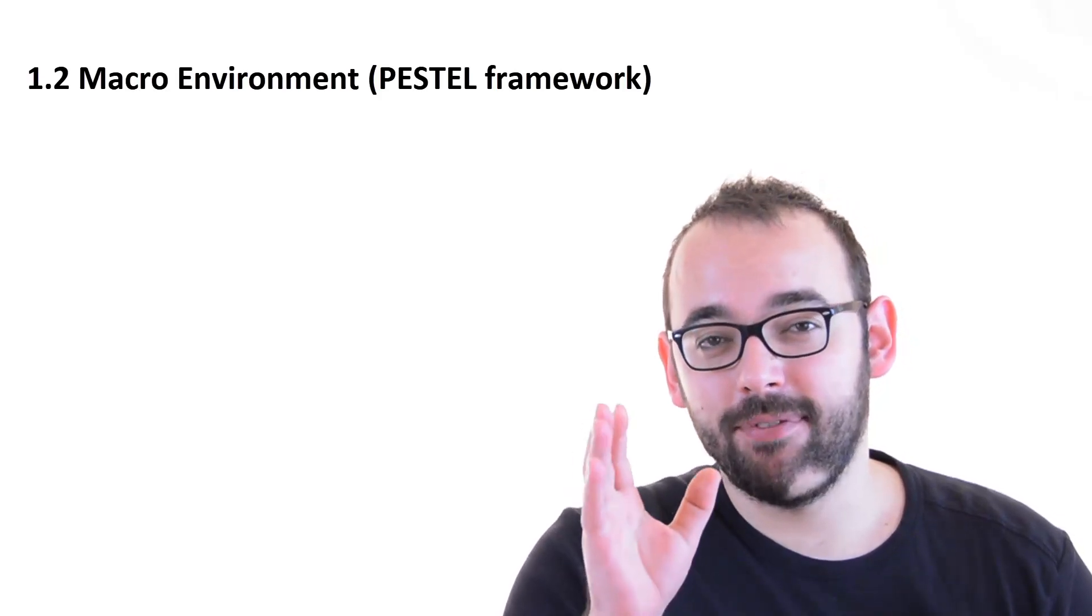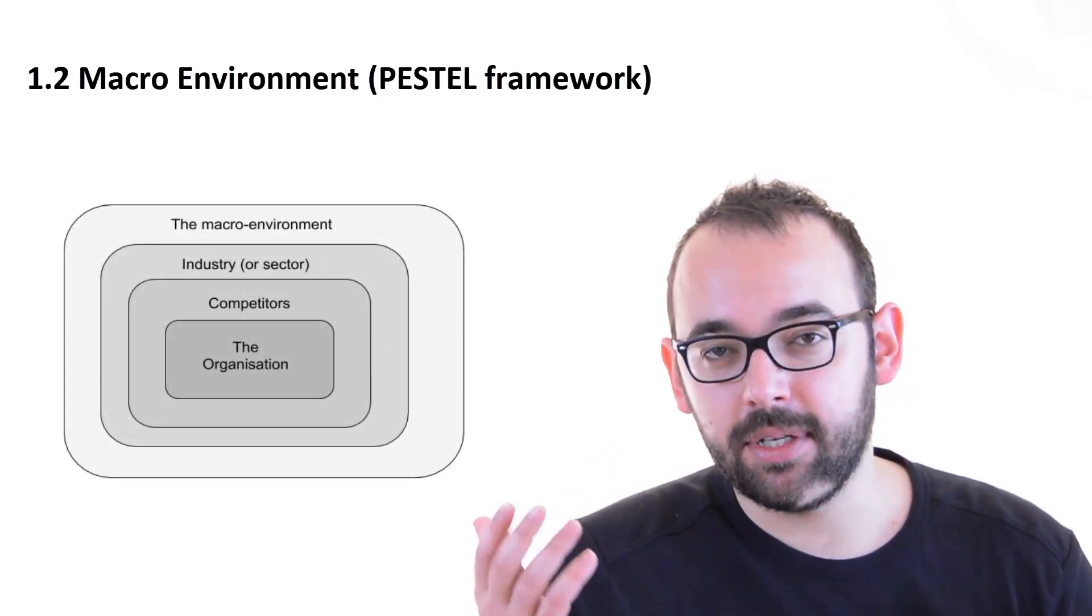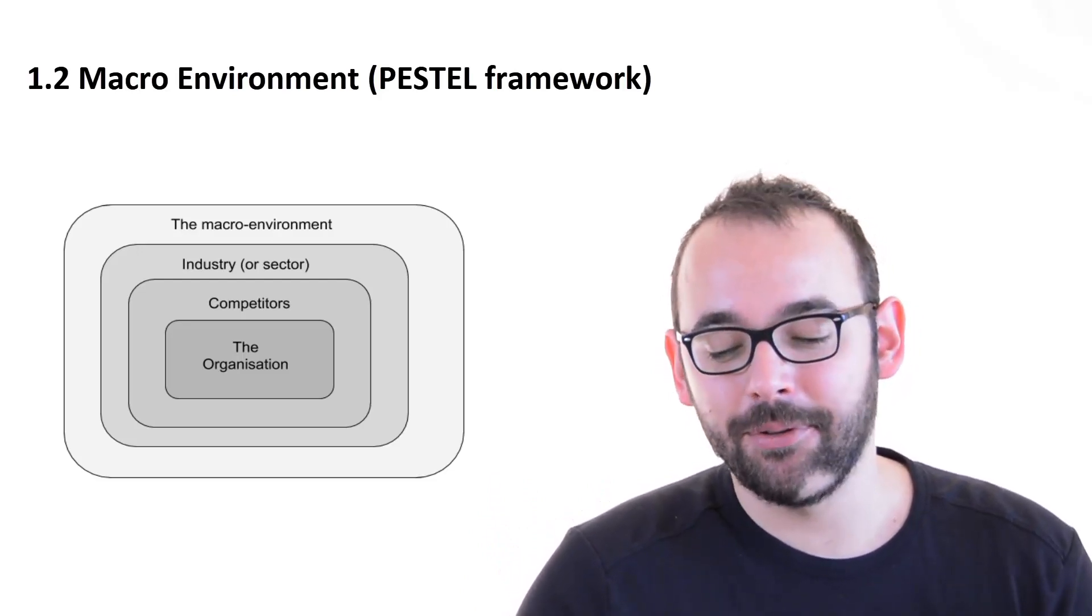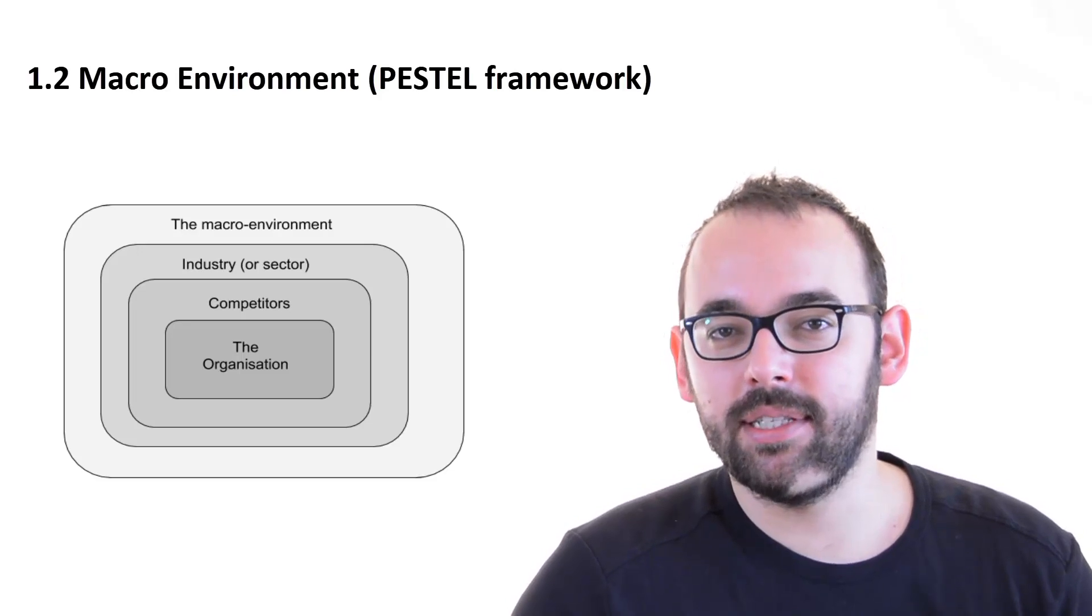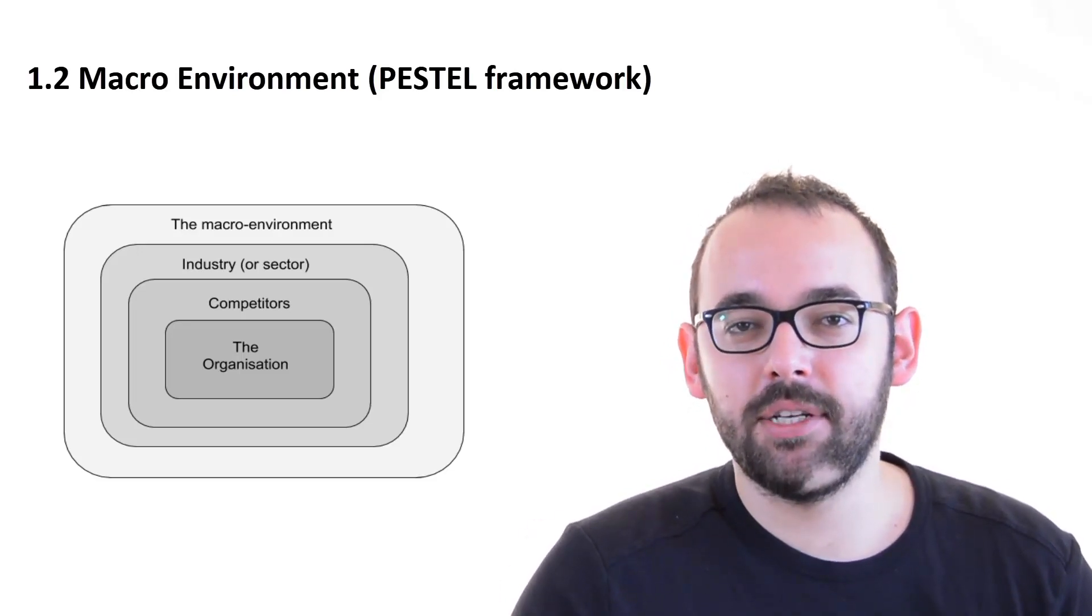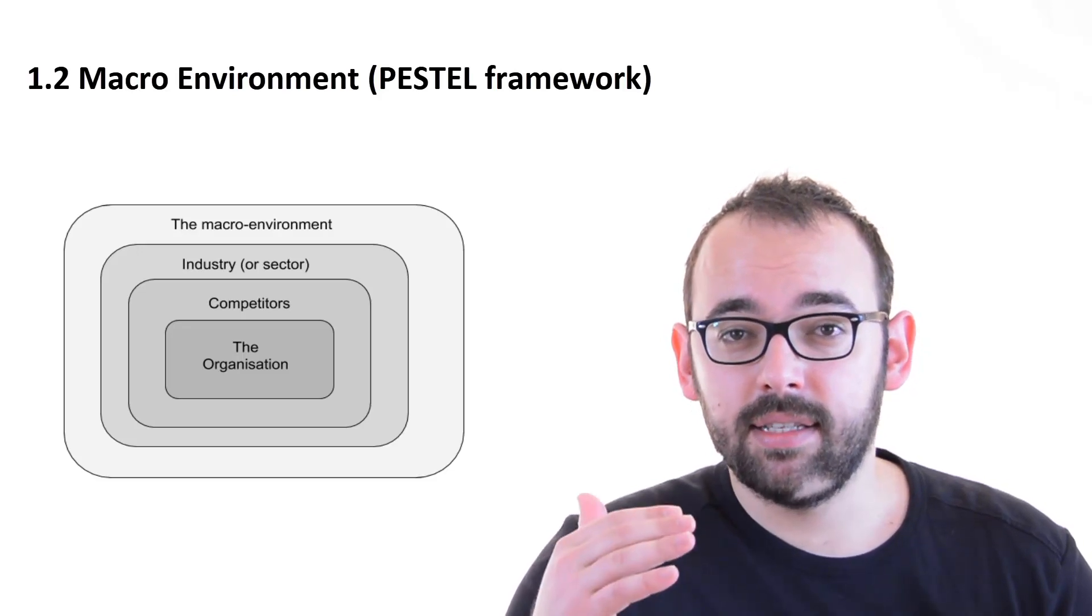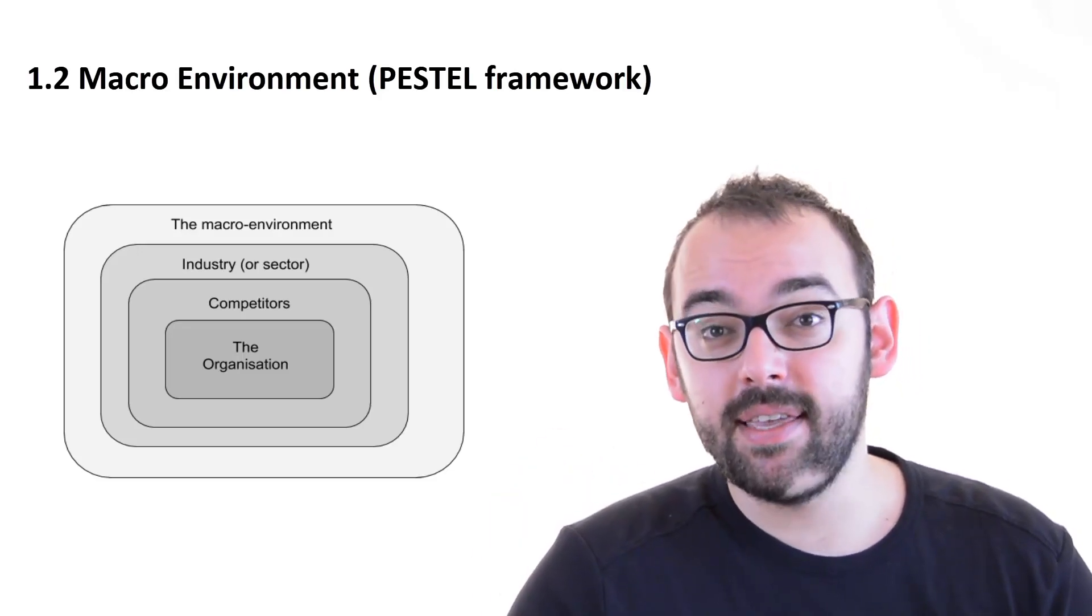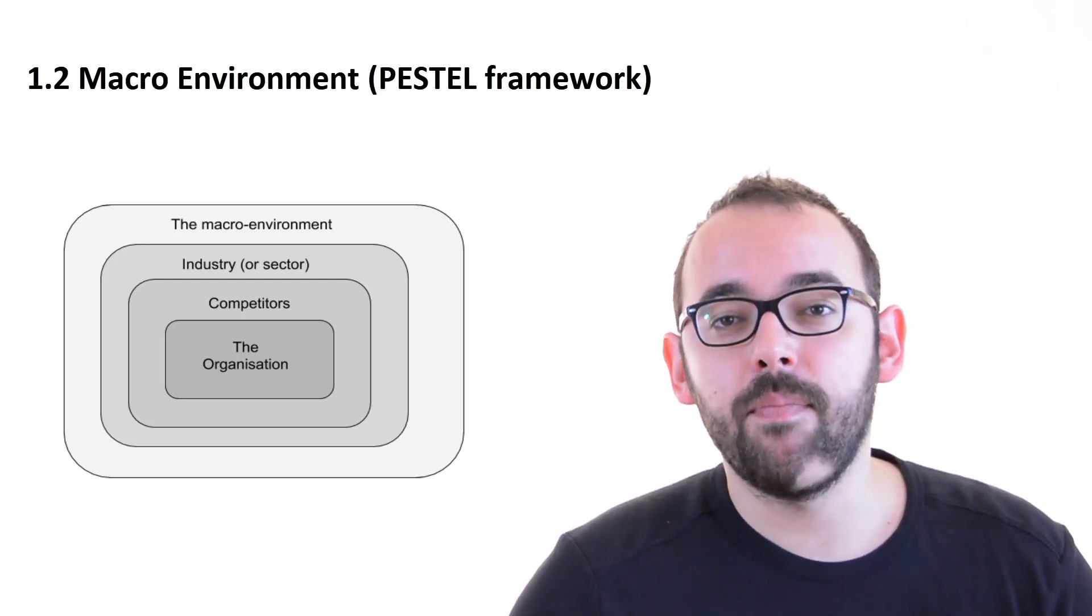And for this first module, we are going to revolve around a simple concept or this picture you are going to see the entire module. This is about what is surrounding every organization. If you imagine an organization, right around it are going to be its competitors. Then, slightly outward, there will be an industry or a sector. And the most outer layer is the macro environment.